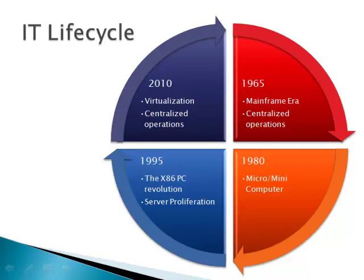By 1980, computers had shrunk to the point that decentralized computing was a reality. Businesses could now own their own equipment and manage their own resources. When 1995 rolled around, not only had the x86 revolution taken hold, but the Internet had gone private, leading to massive proliferation of servers. It was clear that a better solution was necessary.